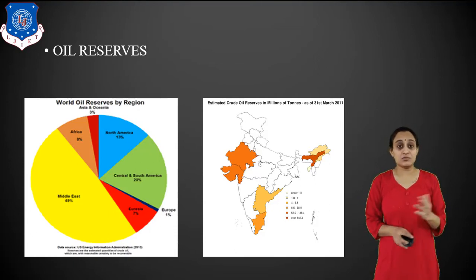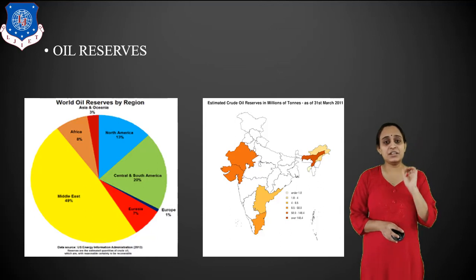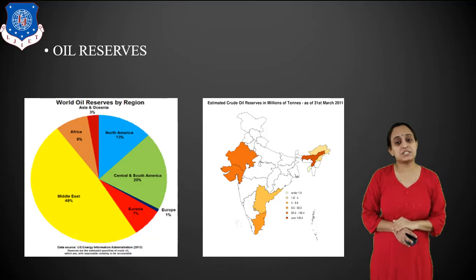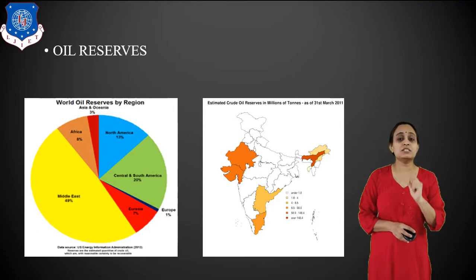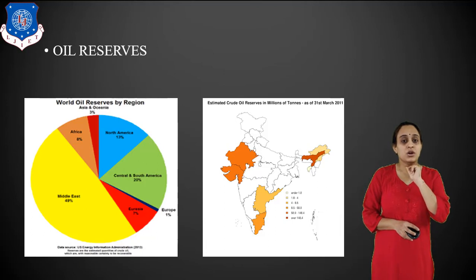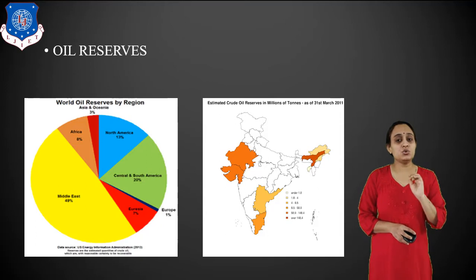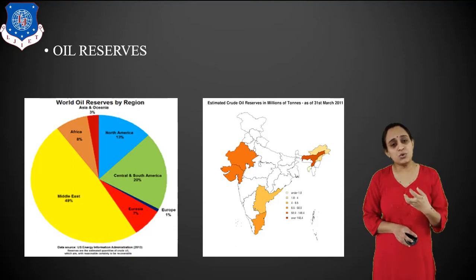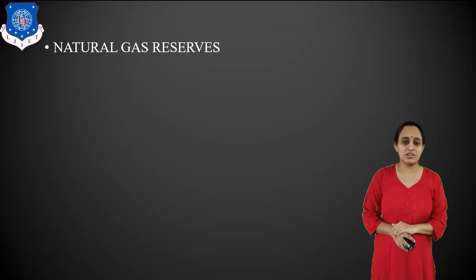India holds 4.72 billion barrels of proven oil reserves as of 2016, ranking 24th in the world and accounting for about 0.3% of world's total oil reserves. India has proven reserves equivalent to 2.9 times its annual consumption. As we know, we require more oil than we produce.